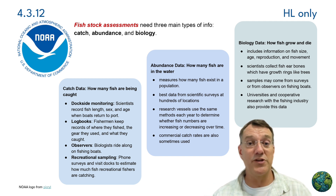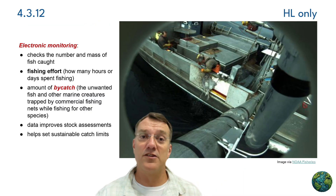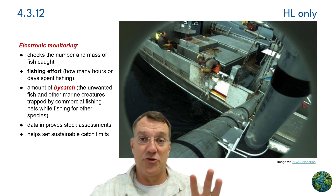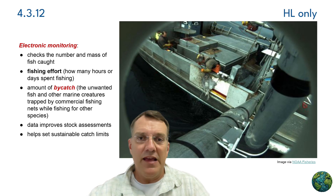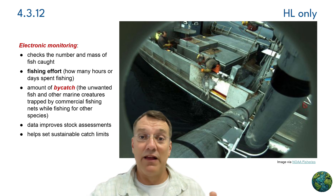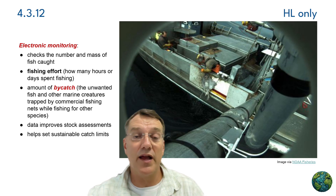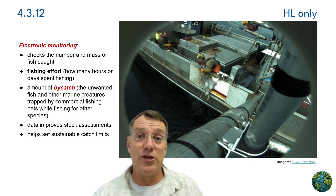Many international agreements require countries to use scientific assessments when setting fishing limits, ensuring that economic activities don't exceed environmental limits. Modern technology enhances our ability to monitor fishing activities. Electronic monitoring systems track the number and mass of fish caught, measure fishing effort, and document bycatch — the unintended capture of non-target species. This technology serves both economic and environmental purposes, providing more accurate data for stock assessments while helping fishing operations become more efficient and sustainable. From an environmental law perspective, electronic monitoring can help enforce fishing regulations and ensure compliance with international agreements, while also promoting transparency in how we use marine resources.